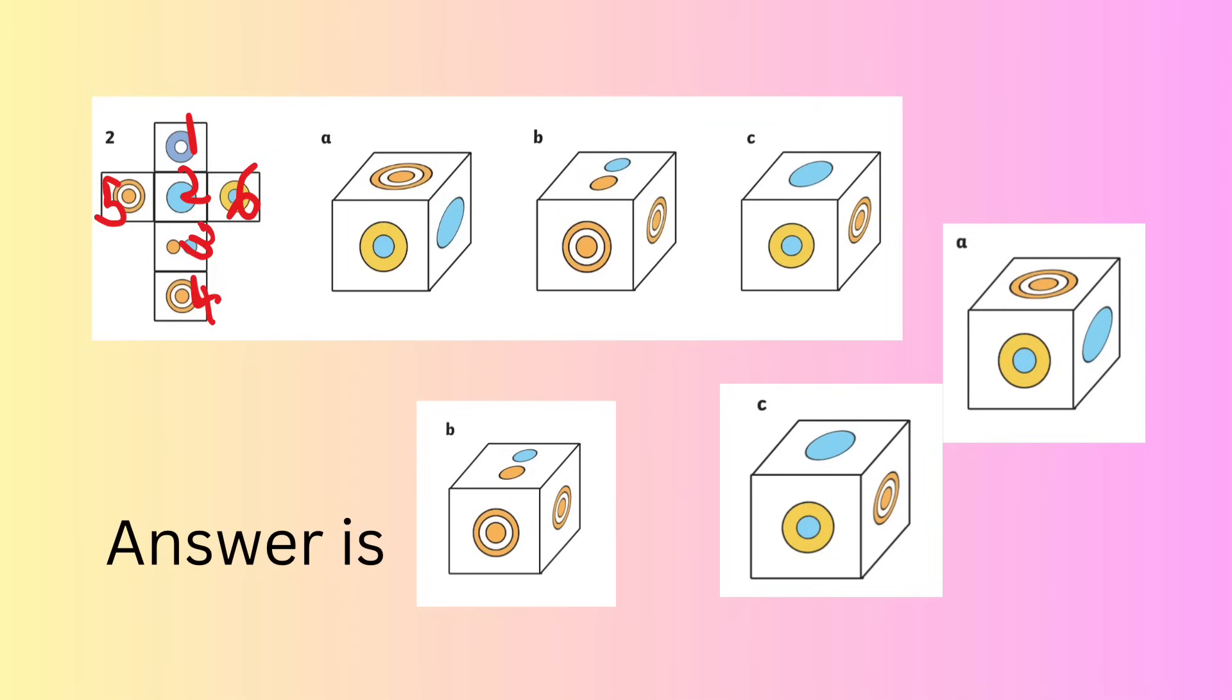A cannot be made. 5 and 6 must be opposite, but the orange bullseye (5) is shown adjacent to the yellow plus blue ring (6). B can be made.